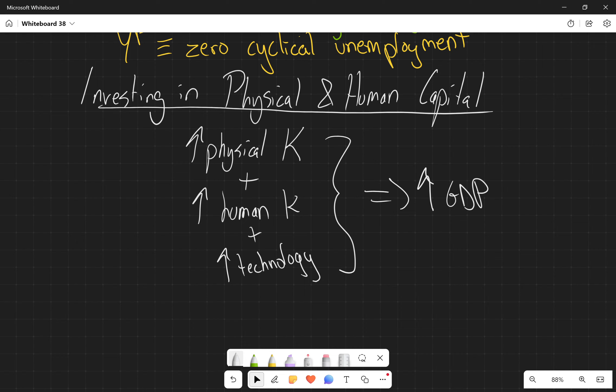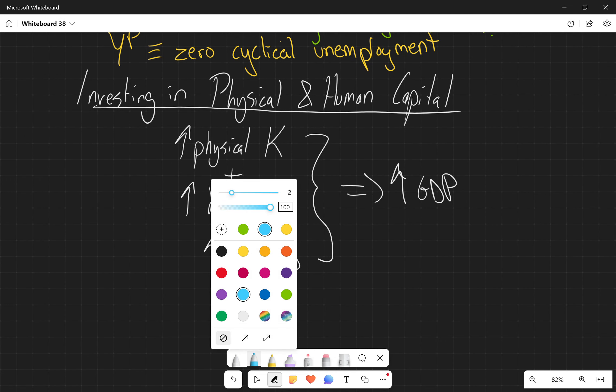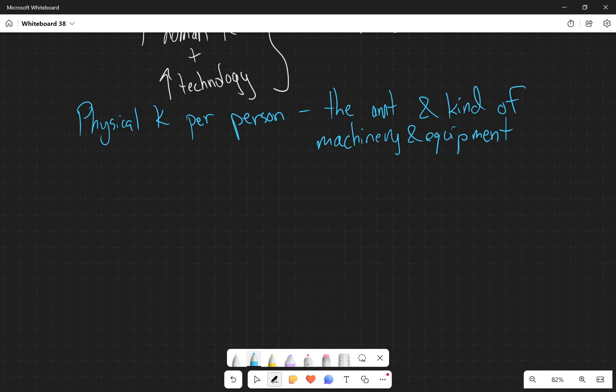And so some of this stuff we can measure, like we can measure the amount of physical capital per person. This is the amount and the kind of machinery and equipment that's available to help a person produce a good or service.